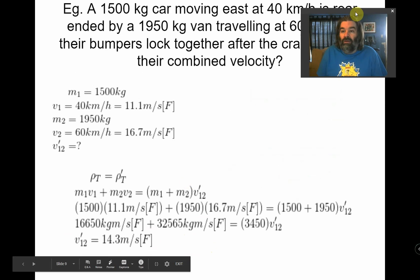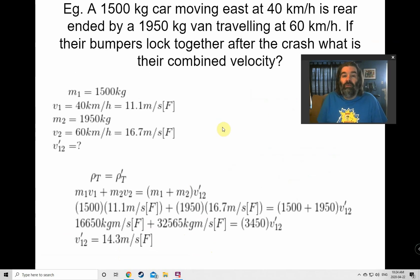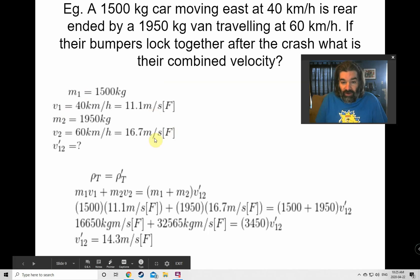So an example of that would be, let's say you have a 1500 kilogram car moving east at 40 and it's rear-ended by a slightly heavier van traveling at 60. And if the bumpers lock together, what's their combined velocity? Well, we write out what we know. Don't forget the directions. They're both in the same direction this time.